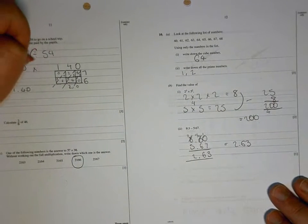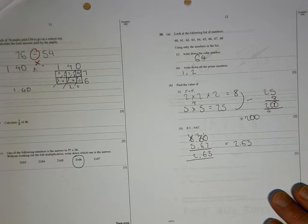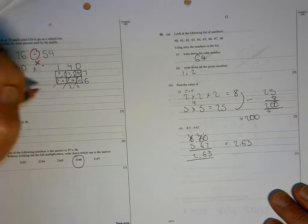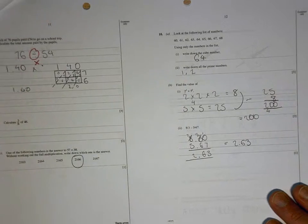Right, you're looking at the wrong method there. That should be a times that you're doing. It should be 76 times 54. So your method is completely wrong there.